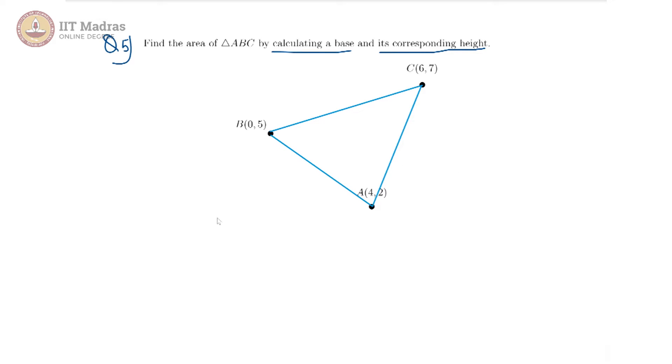So we need to find the base length which is AC and that would be by Euclidean distance formula to be 4 minus 6 the whole square plus 2 minus 7 the whole square, the whole under root. So this comes out to be the root of 4 plus 25. So that gives us root 29 is the base.